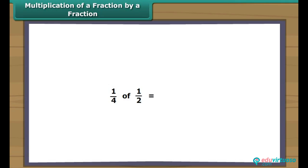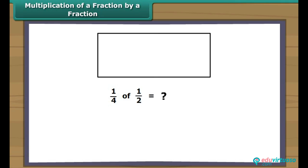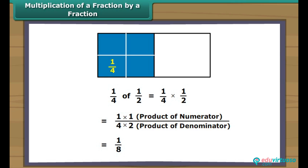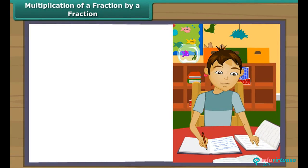Multiplication of a fraction by a fraction: Let us find the product of two fractions, like one-fourth of a half. The shaded portion in the figure represents half of the whole. Dividing that part into four equal parts, each part represents one-fourth of a half. One-fourth of a half means one-fourth multiplied by one-half, which equals one-eighth. We multiply two fractions as the product of numerators over the product of denominators.